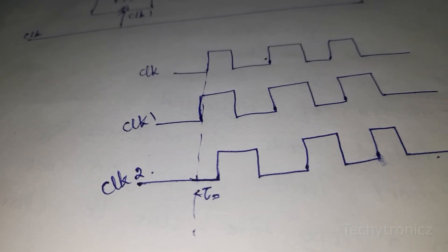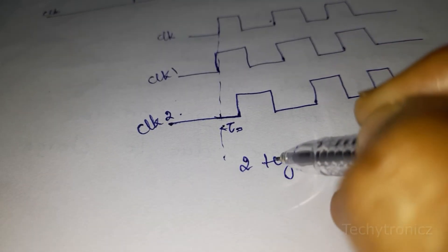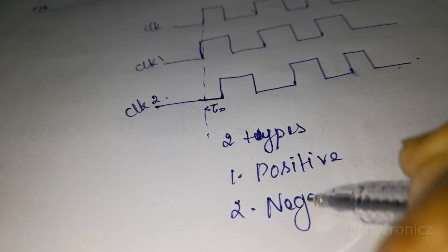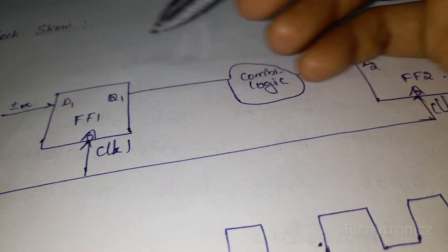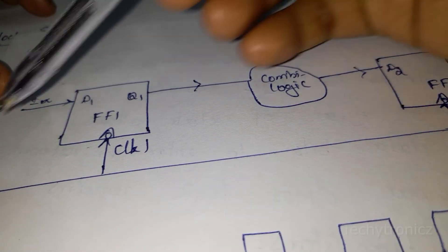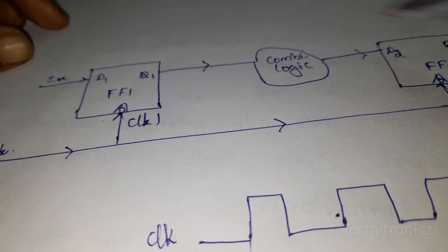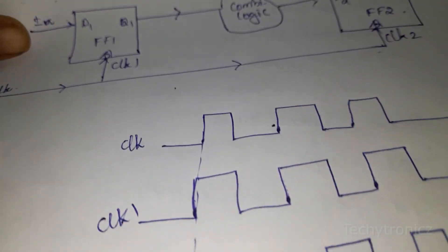There are two types of clock skew: one is positive and another one is negative. For positive clock skew, the input data flow path and the clock flow are in the same direction.